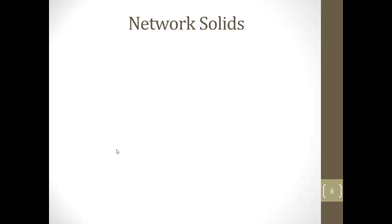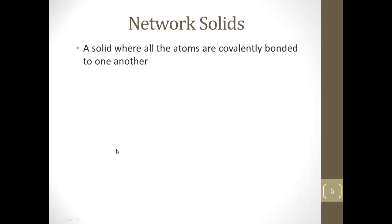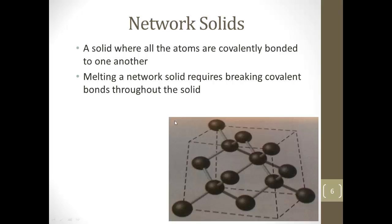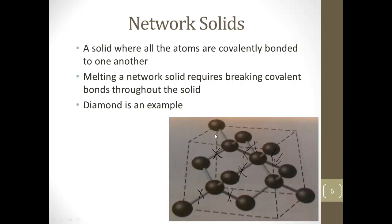One more topic: network solids. These are very strong solids where all the atoms are covalently bonded to one another. Unlike metallic bonding where electrons flow freely, here the electrons are shared and form a very strong linked structure. Melting a network solid isn't just a matter of pulling forces apart — it means breaking many of these bonds throughout, requiring a lot of energy and giving them very high melting points, sometimes 3,000 degrees Celsius and up. A common example is diamond, which is so strong because of all these bonds everywhere.